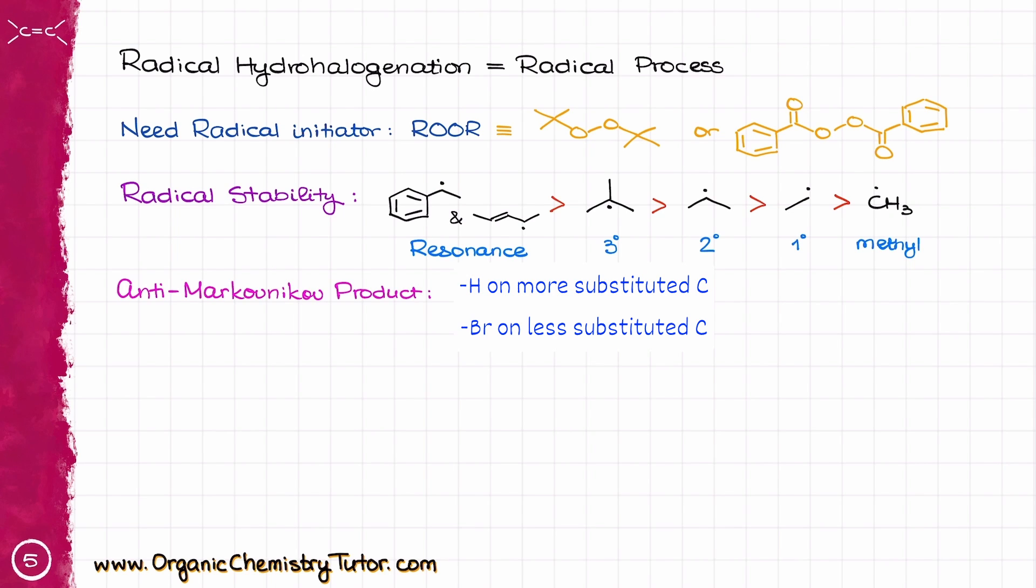so you should always prioritize the resonance stabilized and tertiary radicals before secondary and primary ones. Because of that, this reaction leads to the product where you are going to see the bromine attached to the less substituted atom. Or in other words, this reaction is said to give you the anti-Markovnikov product. And finally, this reaction is not stereospecific,